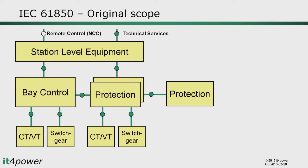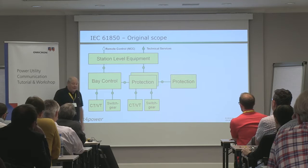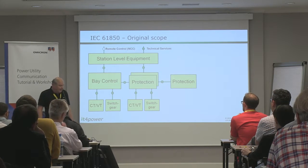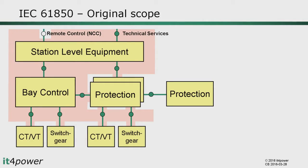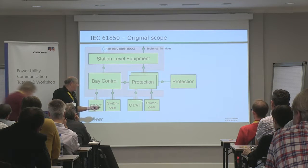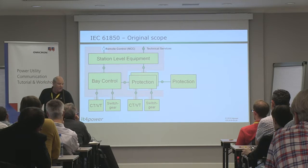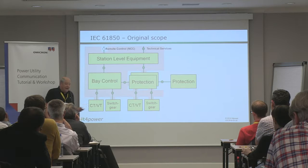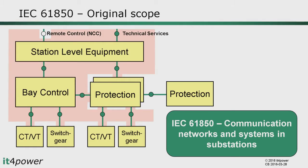Before we go into the different aspects of 61850, I would just like to remind you where we started. The original scope of 61850 was really dealing within the substation — basically covering all aspects of communication between the different levels of equipment: station level equipment, bay level equipment, control and protection devices.